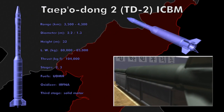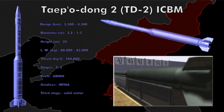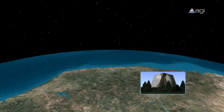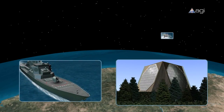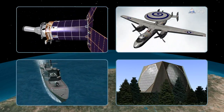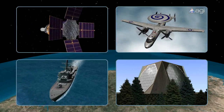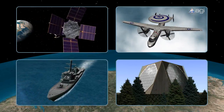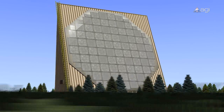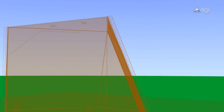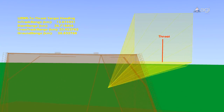AGI analyzes the capabilities of threat missiles to provide insight into system-level effectiveness with coverage analysis over geographic regions. By distributing integrated land, sea, air, and space assets, our users have the ability to explore early threat detection, continuous tracking opportunities, and sensor mapping through land-based X-Band, Cobra Dane, forward deployable, and upgraded early warning radars.